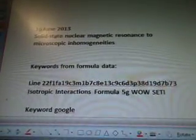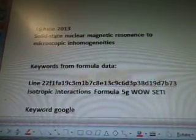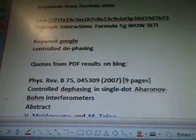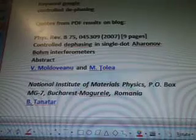It was based on the keywords from a formula found in Nuclear Magnetic Resonance and Microscopic Inhomogeneities, line 22, 7B73, Isotropic Interactions Formula. Keyword Google Controlled Dephasing, quotes from pre-UDF file results on the blog was called Controlled Dephasing in Single Dot, Aharonov-Bohm Interferometers. There's a name of the scientists from Romania and Turkey.